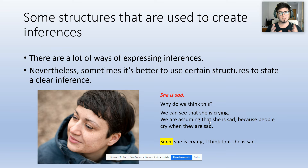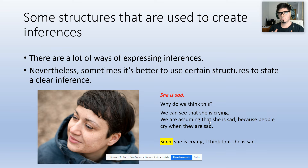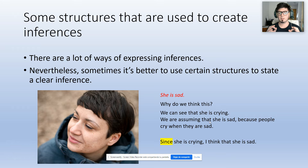For example, in this picture you can see a woman with a tear in her eye. You could say she is sad. But we would like to give more information and put explicit textual evidence in that sentence. So, why do we think this? We can see that she is crying, so we are assuming she is sad because people cry when they are sad. The correct way of stating an inference in this case would be: since she is crying, I think that she is sad.